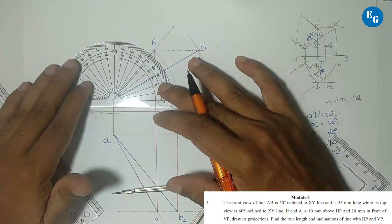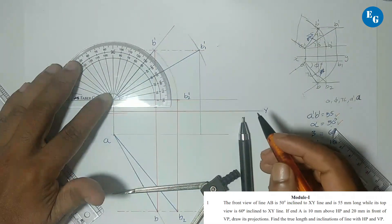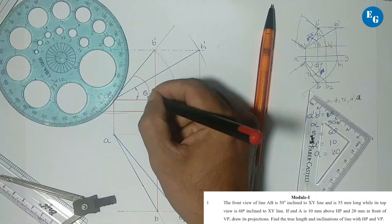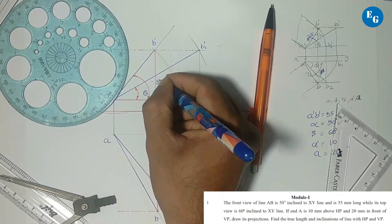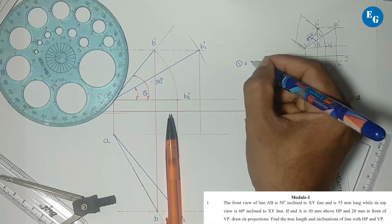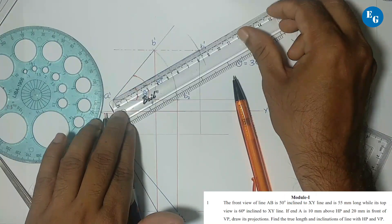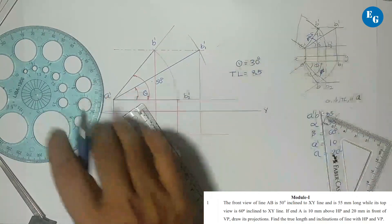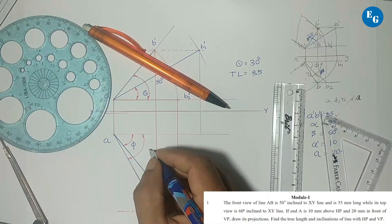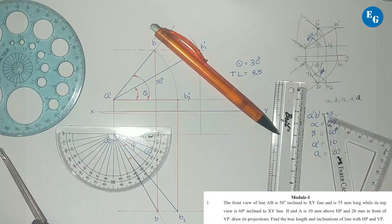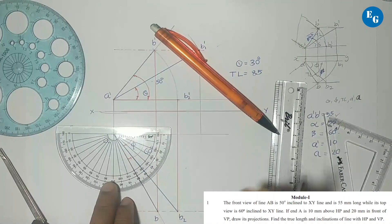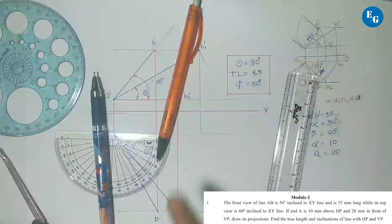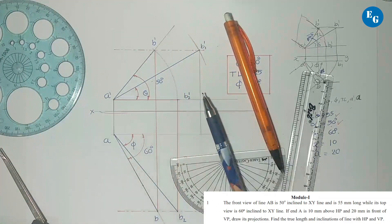Inclination with HP: theta equals 30 degrees. Alpha given is 50 degrees. Inclination with HP equals theta equals 30 degrees. True length equals 85 mm. Beta — top view inclination is 60 degrees. Answer: inclination with HP = 30 degrees, true length = 85 mm. Dimensioning is complete.